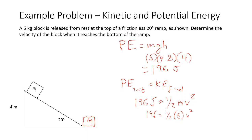And if we calculate this out and solve for the velocity, we will do 196 times 2 divided by 5, and then we'll take the square root of that, which will give us a final velocity of 8.85 meters per second.